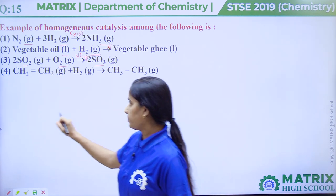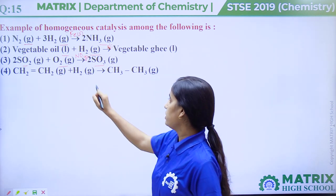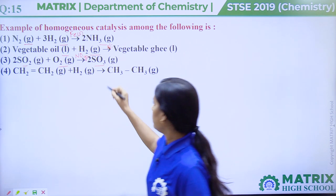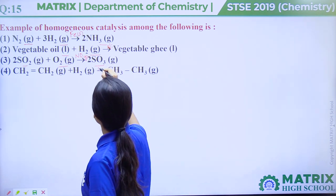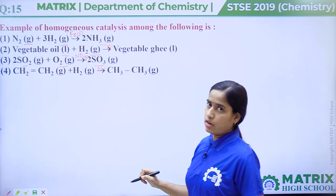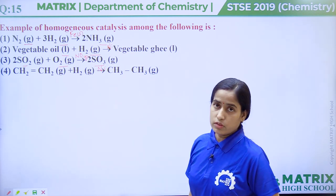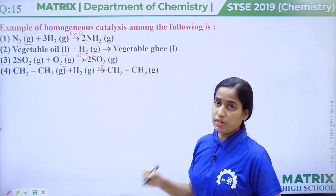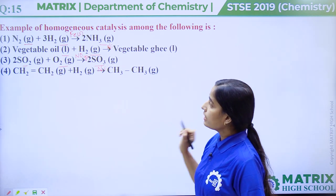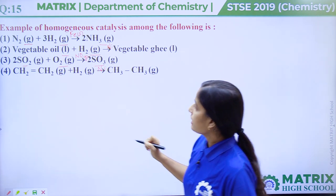Option 4: Ethene on hydrogenation forms ethane in the presence of nickel catalyst, which is solid — so this is also an example of heterogeneous catalysis. Therefore, the correct answer for homogeneous catalysis is option number 3.